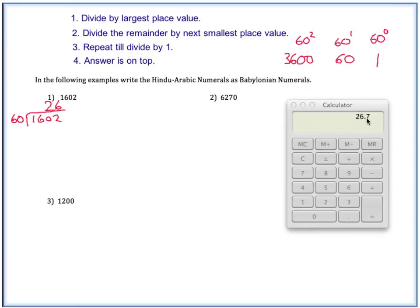So now perform the long division, 26 times 60. And it's 1560. And then subtract here. So just go 1602 minus 1560. And we get 42.